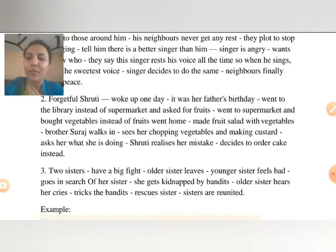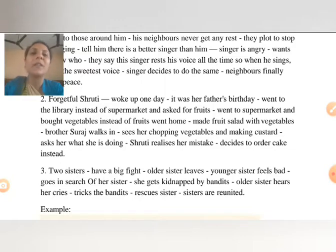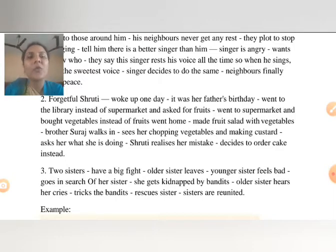Forgetful Shruti: She woke up one day, it was her father's birthday. She went to the library instead of the supermarket and asked for fruits. Then went to the supermarket and bought vegetables instead of fruits. She went home and made fruit salad with vegetables. Her brother Suraj walks in, sees her chopping vegetables and making custard, asks her what she is doing. Shruti realized her mistake and decides to order a cake instead.